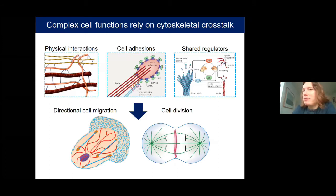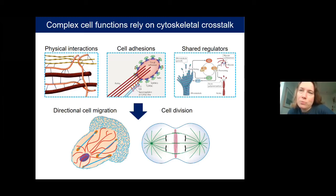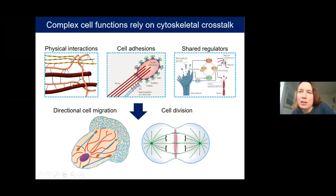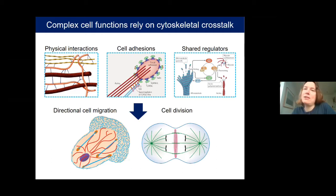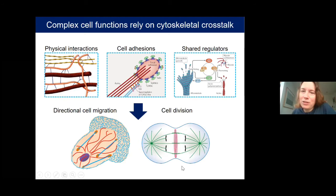In reality, complex cellular processes such as cell migration or cell division rely on an intricate cross-talk between the four filament systems. This cross-talk arises from physical interactions: cross-linkers that connect the systems, interactions at cell-cell and cell-matrix adhesions where different filament systems meet, and biochemical cross-talk through shared regulators. This coupling is very important for how cells establish and maintain cell polarity, form a contractile ring at the center of the mitotic spindle for division, or define a front and a back for directional cell migration.